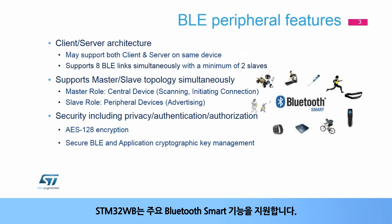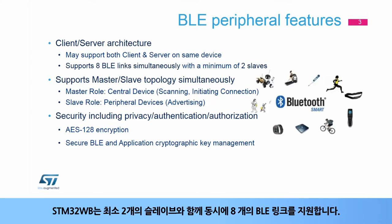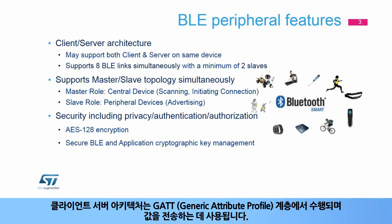The STM32WB supports the main Bluetooth smart features. A BLE device is either a master or a slave device for one link. The STM32WB supports eight BLE links simultaneously with a minimum of two slaves. The terms master and slave are the link layer roles equivalent to central and peripheral. The client-server architecture is done at the GATT, or Generic Attribute Profile layer, and is used to transfer values.